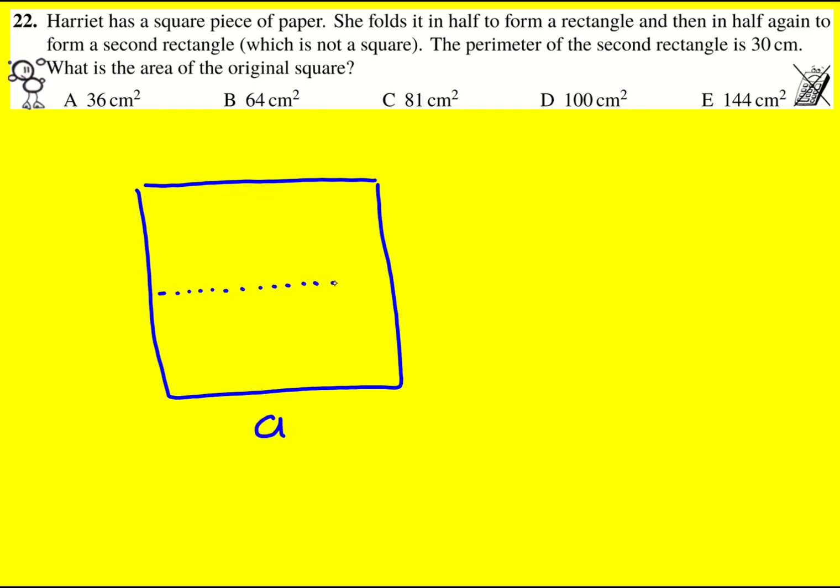I'm going to fold it in half this way, so it's going to be a half A. But then because I fold it in half again to form another rectangle, it's not going to be this way because that will create a square. Basically I've now got rid of that and I'm just left with this, fold in half again.